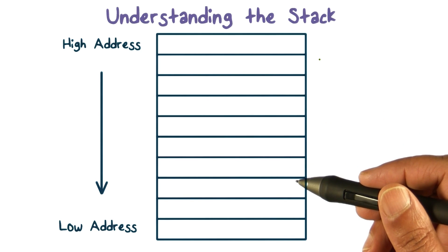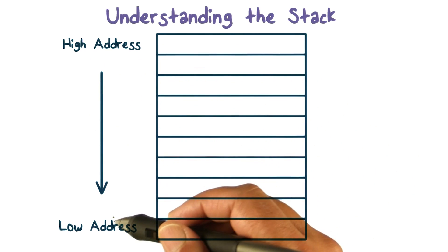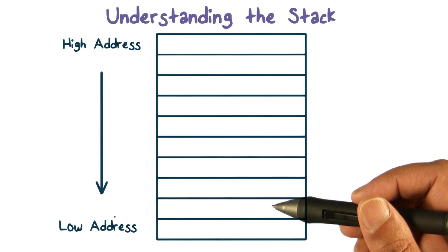So these addresses increase as we go down the address space. So when I say the stack is going from high addresses to low addresses, what does that mean?